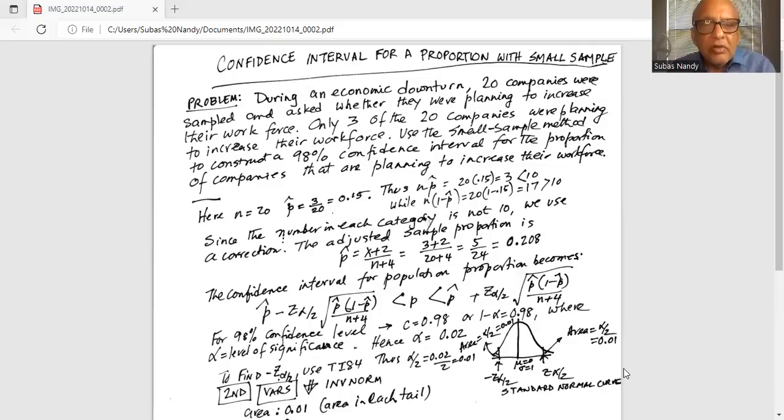Here n equals 20, the sample size. P-hat is the proportion of companies who are willing to hire, which is 3 out of 20, or 0.15. n times p-hat is 20 times 0.15, which is 3, and that is less than 10.